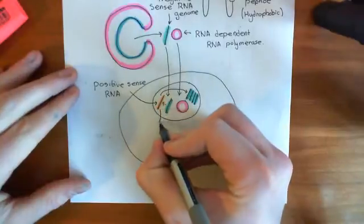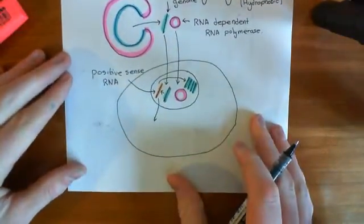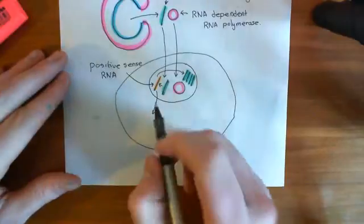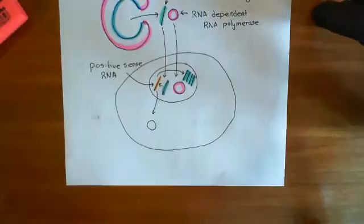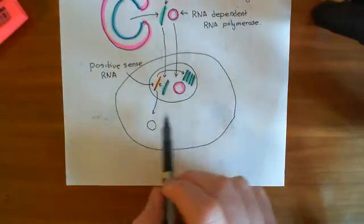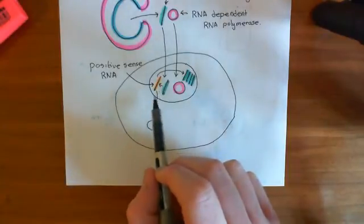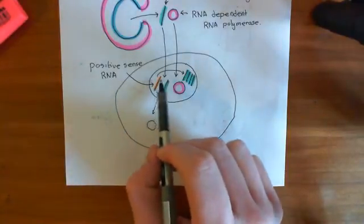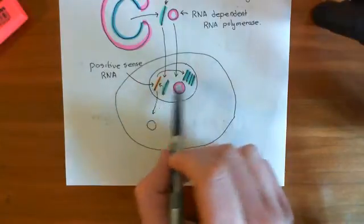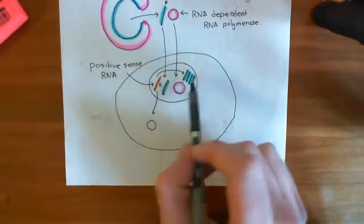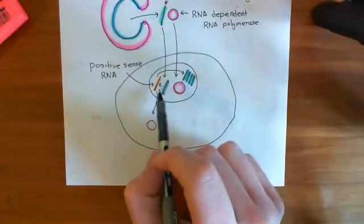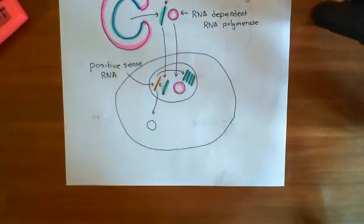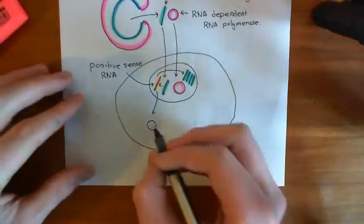In addition, the positive sense RNA can go into the cytoplasm of the cell and go to the ribosomes of the cell. This is what is meant by hijacking the cellular machinery — it's going to use the cell's own machinery to make proteins. It's already used the cell's RNA nucleotides to copy this RNA, which is why it went to the nucleus, to gain access to the RNA nucleotides. Now it's going to use the cell's ribosomes to make its proteins.